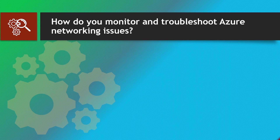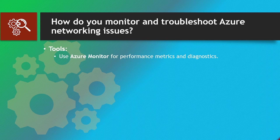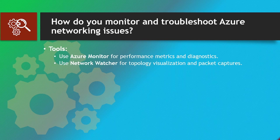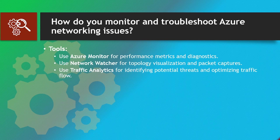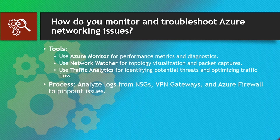How do you monitor and troubleshoot Azure networking issues? Tools: use Azure Monitor for performance metrics and diagnostics, use Network Watcher for topology visualization and packet captures, and use traffic analytics for identifying potential threats and optimizing traffic flow. Process: analyze logs from NSGs, VPN gateways, and Azure Firewall to pinpoint issues.